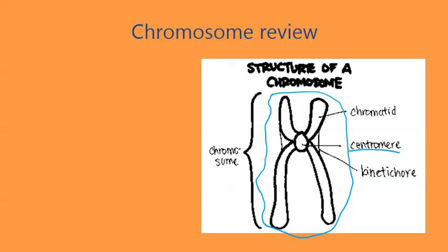This central area, this region right in here, is called the kinetochore. So the centromere is the center part of a chromosome, and this middle region is called the kinetochore. The kinetochore is important in the next couple of steps, so keep that in mind.